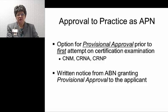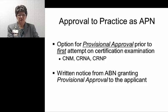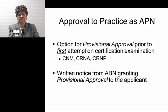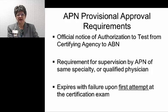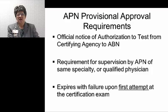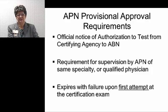To obtain provisional approval, you must request this in your online application, and you cannot practice under provisional approval until you receive written notice from the Alabama Board of Nursing. The provisional requirements include official notice of authorization to test sent directly to the Board of Nursing from the certifying agency, and a requirement for supervision by an advanced practice nurse of the same specialty or by a qualified physician of an appropriate specialty. Provisional approval expires with failure upon the first attempt at the certification exam, and it is not available on subsequent applications.